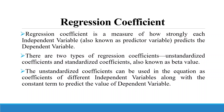There are two types of regression coefficients. One, unstandardized coefficient from which we make the model, and the second one is a standardized coefficient also known as a beta value. The unstandardized coefficient can be used in the equation as a coefficient of different independent variables along with the constant term to predict the value of the dependent variable.